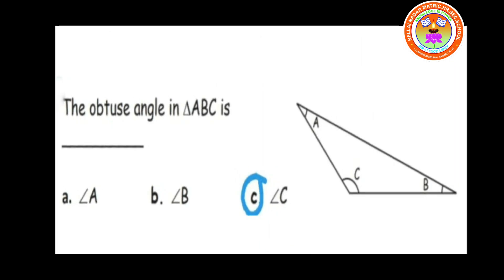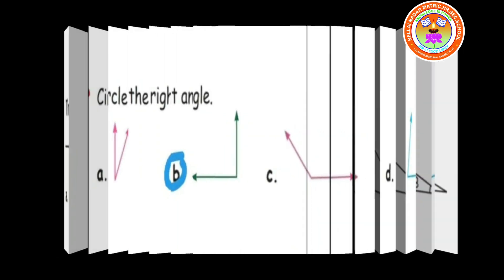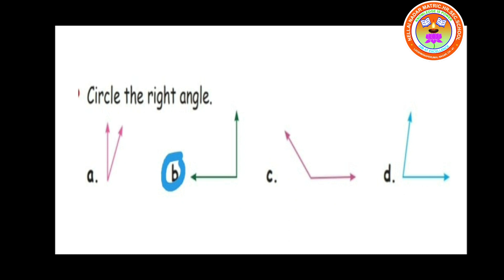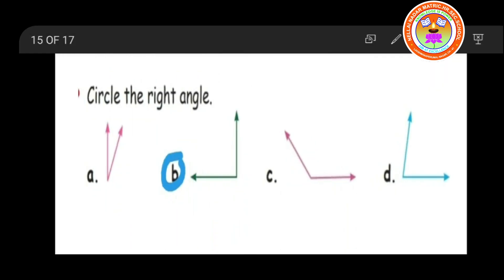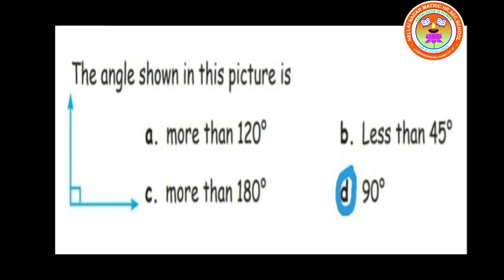Next, observe this diagram, children — triangle A, B, C. The obtuse angle in triangle A, B, C — which one shows the obtuse angle? Angle C. So option C is the answer. Next: circle the right angle. You can observe option A, option B, option C, and option D. From these 4 options, which one is 90 degree? The answer is option B. Option B shows the right angle because option C is obtuse angle, and the others do not show the right angle. Right angle means 90 degree. Next: the angle shown in this picture is — more than 120 degree, less than 45 degree, more than 180 degree, or 90 degree? The answer is 90 degree. What type of angle is it? Right angle. Very good, children.